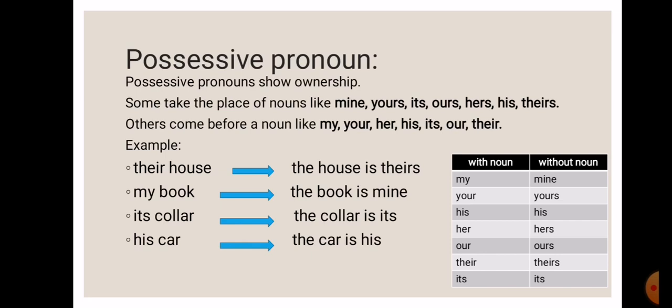Let's move on to the possessive pronoun. A possessive pronoun shows ownership. It tells you to what or to whom something belongs. Some take the place of nouns like mine, yours, its, ours, hers, his, theirs. Others come before a noun like my, your, her, his, its, our, their. For example: Their house. You can also say the house is theirs. My book. The book is mine. Its color. The color is its. His car. The car is his.